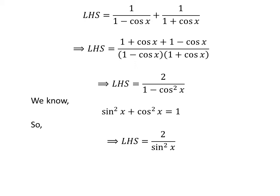Thus, left-hand side of the identity is equal to 2 upon square of sine of x. So, left-hand side of the identity is equal to 2 times square of cosecant of x, which is equal to right-hand side of the identity. Thus, we proved the identity.